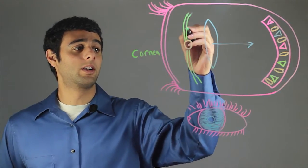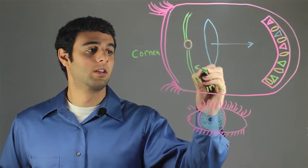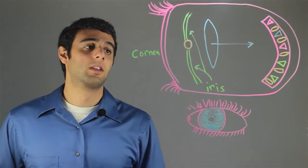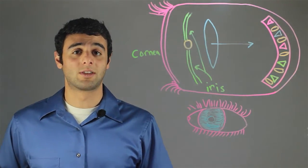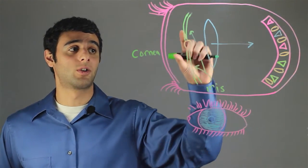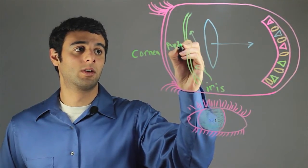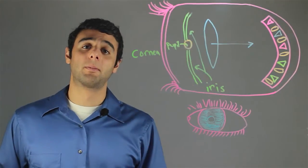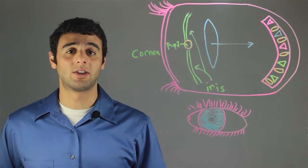Over here we have the iris. The iris is a photopigmented muscle that's responsible for contracting and dilating the pupil. The pupil is the actual opening for light to enter the eye.